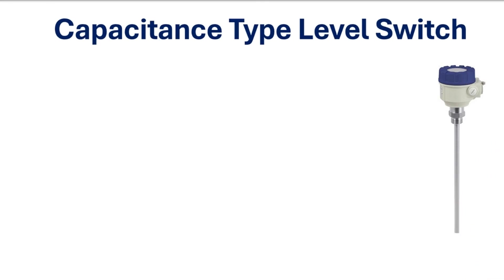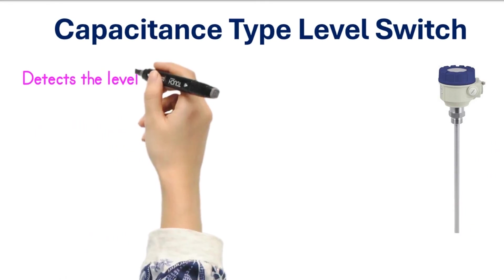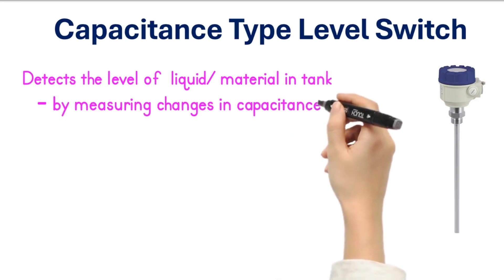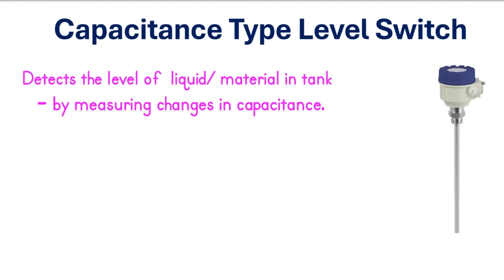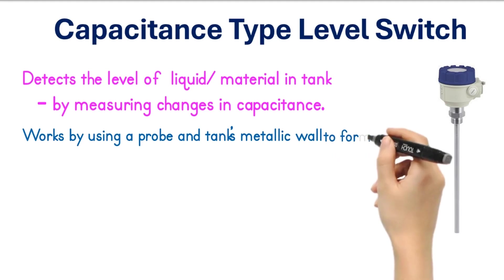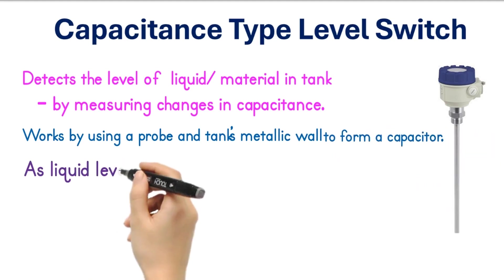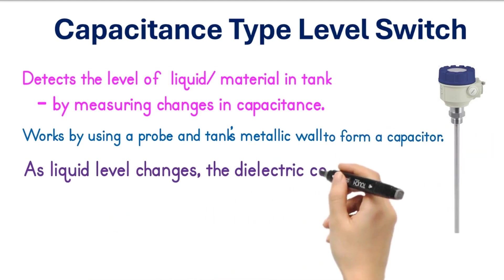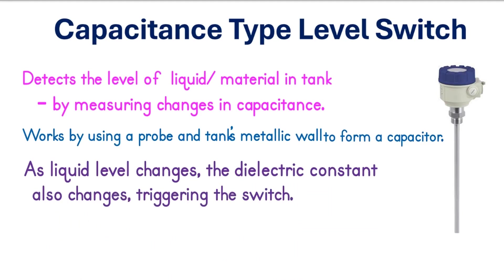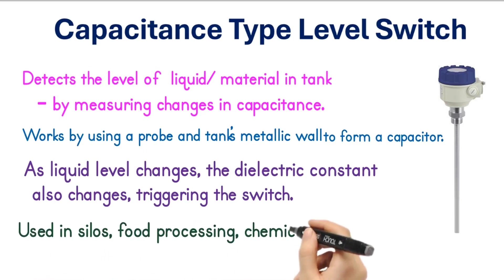Capacitance type level switch. The capacitance level switch detects the level of a liquid or material in a tank or container by measuring changes in capacitance. It works by using a probe and the tank's metallic wall to form a capacitor. As the liquid level changes, the dielectric constant also changes, triggering the switch. It is commonly used in silos, food processing, and chemical industries.